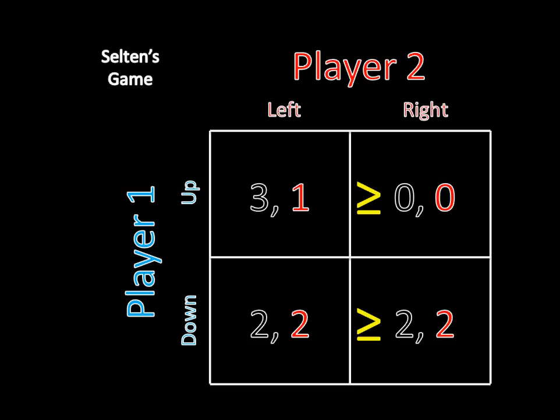If we apply our weak dominance approach, then we see that left weakly dominates right for player 2. That is, if player 1 moves up, player 2 is strictly better going to the left because this 1 is going to be greater than this 0. But it's in the second case where if player 1 moves down, then 2 is going to be equal to this 2. So we have to use these weak inequality signs. So we can say here that left weakly dominates right.